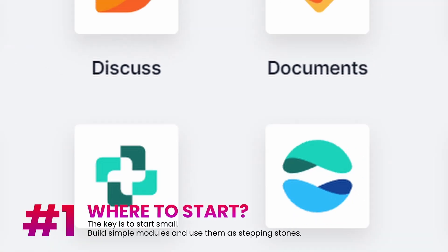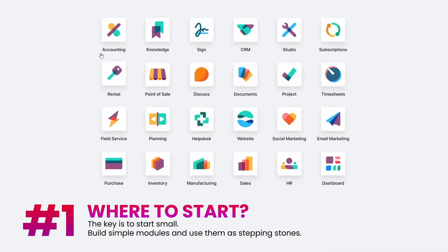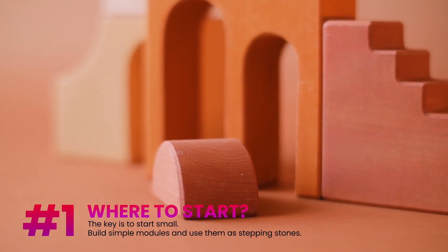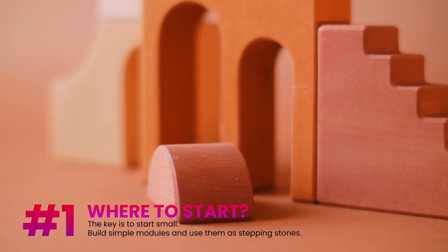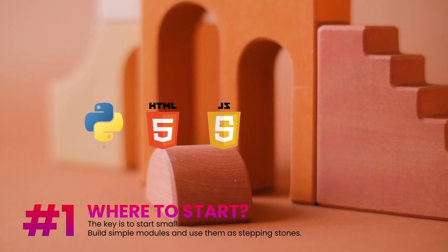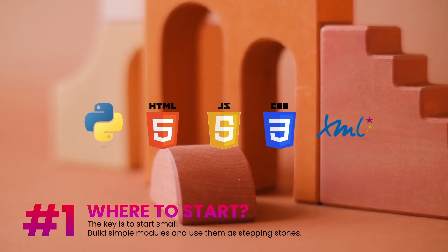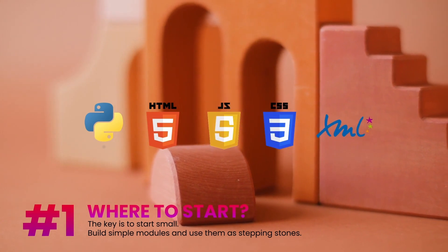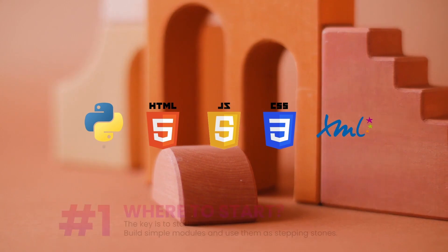First up: where to start? With Odoo's vast ecosystem, it's easy to feel lost. The key is to start small. Build simple modules and use them as stepping stones. Make sure you're comfortable with Python, JavaScript, HTML, CSS, and XML, as they're the pillars of Odoo development.